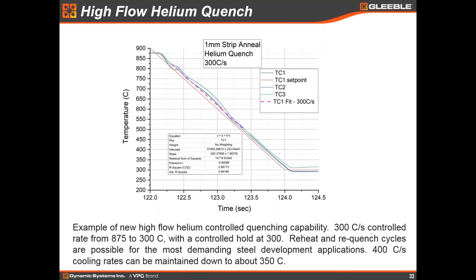DSI has also achieved 300°C per second cooling rates using a high-flow helium quench. By changing the pressure regulator to allow a much higher gas flow and using helium instead of nitrogen, initial experiments have achieved up to 400°C per second maintained down to about 350°C, with 300°C per second sustainable down to about 300°C. This capability will be commercialized very soon and the published specifications will be updated to reflect the high-flow helium cooling option, which is particularly relevant for advanced high strength steels.